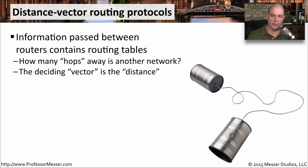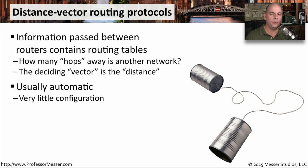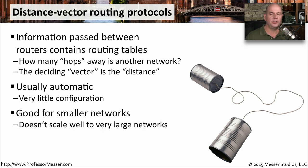A distance vector routing protocol is most concerned about how far away a particular network is. Generally, in routing, we think about distance based on the number of hops — the number of routers we have to traverse to get to that location. This requires very little configuration; the dynamic routing protocol communicates between all the different routers, and they update each other on how far it is to reach a particular location. A distance vector protocol is good for relatively small networks, but once you exceed a certain number of hops, the protocol may not support the large hop count or it becomes more difficult to calculate.